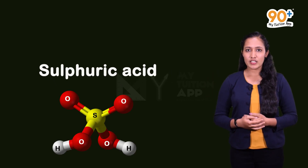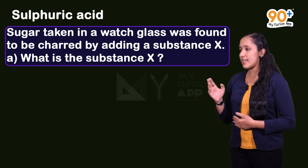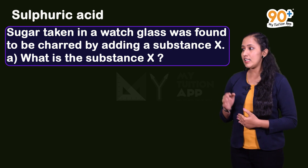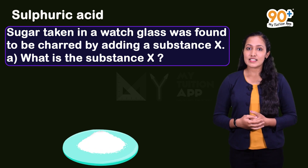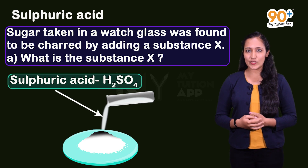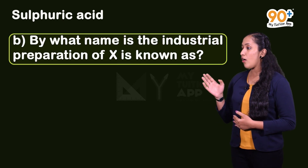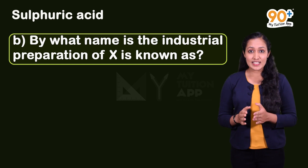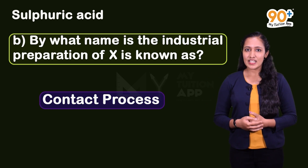Moving on to the last important topic - Sulfuric Acid H2SO4. First question: sugar taken in a watch glass was found to be charred by adding a substance X. A - what is the substance X? We already learned that when sulfuric acid is added to sugar, the sugar chars. So the answer is sulfuric acid. B - by what name is the industrial preparation of H2SO4 known? The method used to industrially prepare sulfuric acid is the contact process, that is sambarka prakriya.